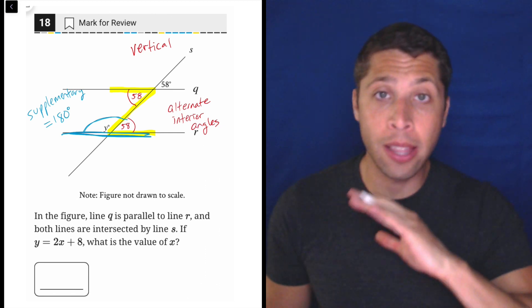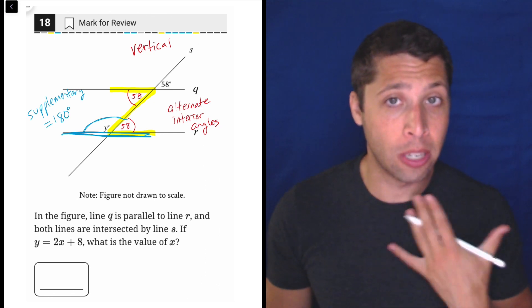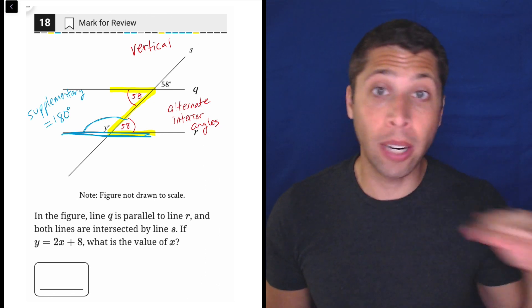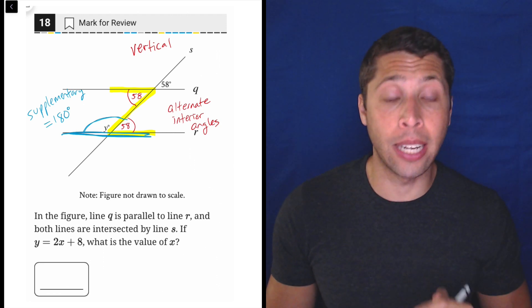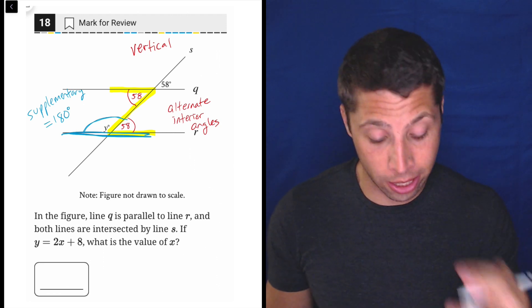This is another rule that we need to know. This is not provided to you in that geometry reference chart. This is something you need to memorize, but yes, any straight line, no matter how many ways we divide it, the straight line still has 180 degrees.